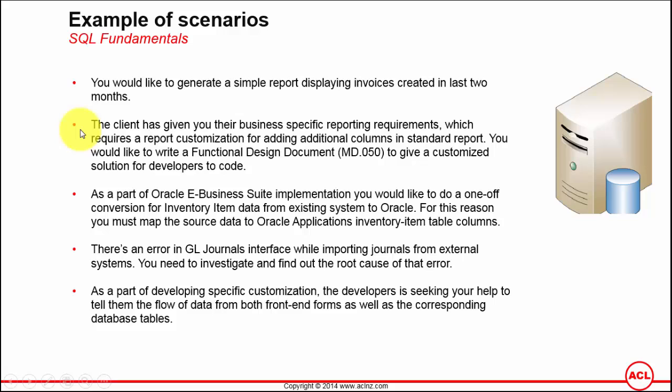The second scenario is when the client has given you specific business reporting requirements that require customization — adding additional columns to a standard Oracle eBusiness Suite report. As part of this customization, you will write a functional design document, also called an MD050, to provide a customized solution for technical developers to code. You go to SQL Developer to find the table structure and identify which tables contain the columns the client has requested, then put that into your functional design document and hand it to developers.